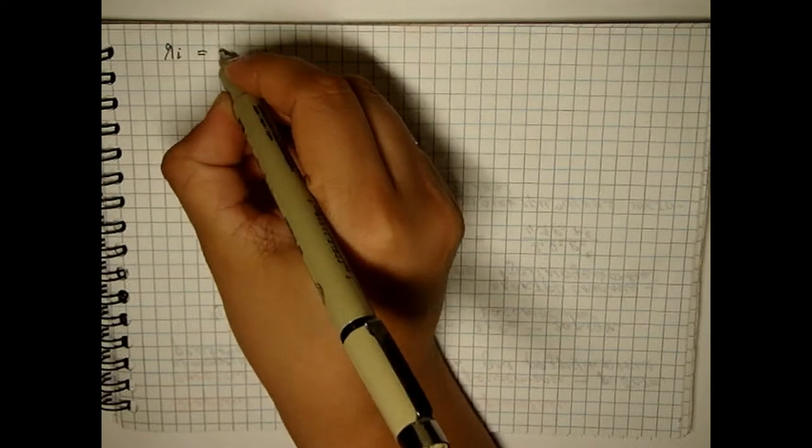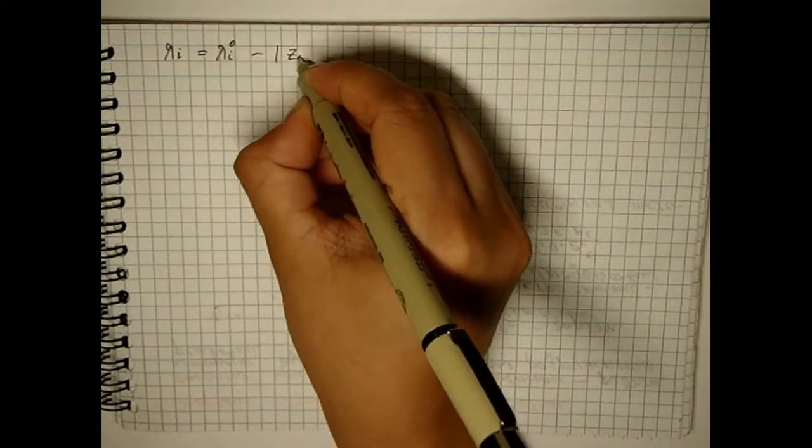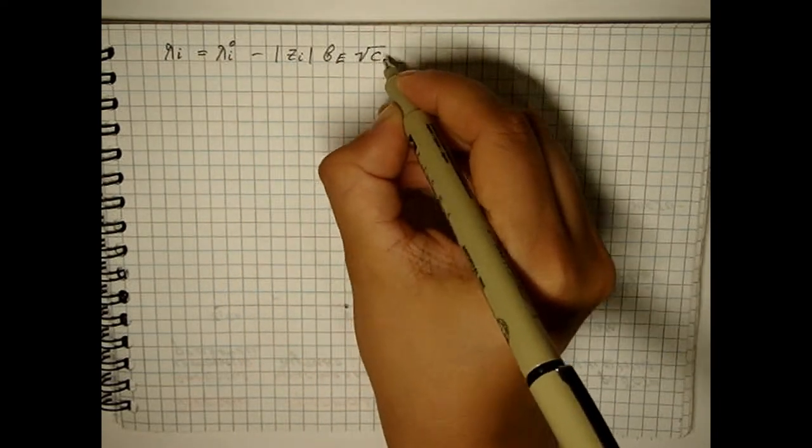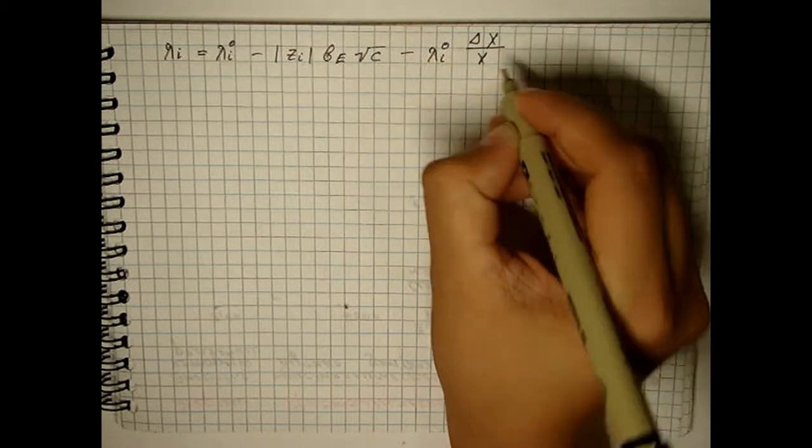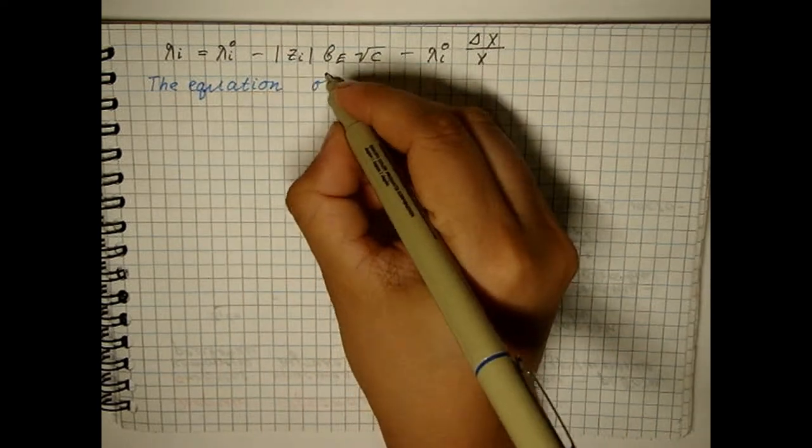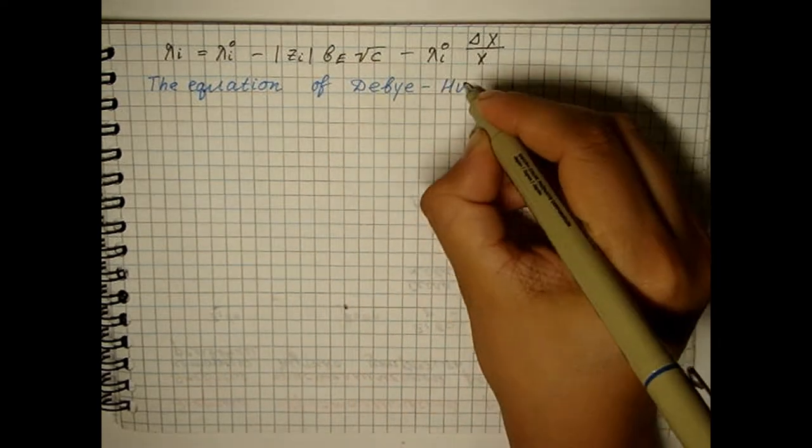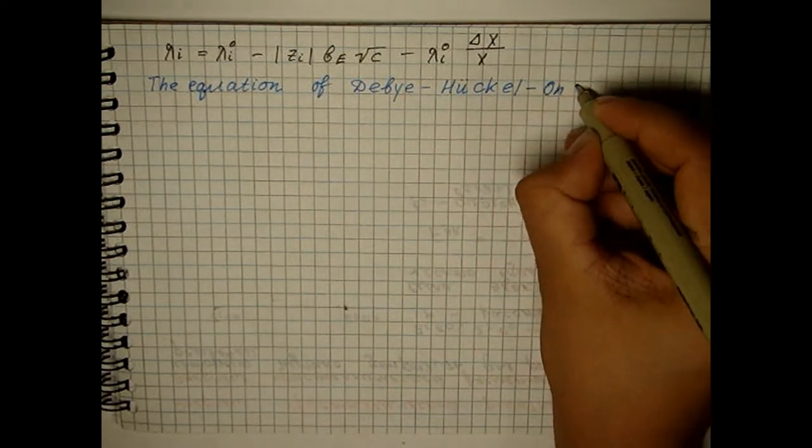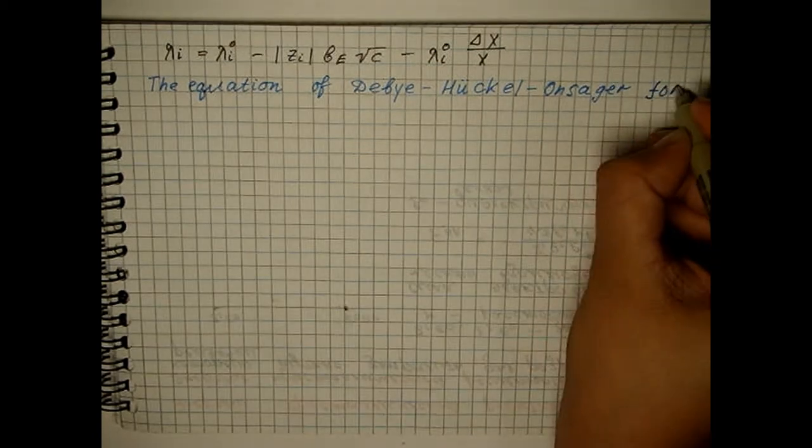Combining the resulting expression with the formula, we obtain the Debye Heukel-Leon-Ziger equation for the electrical conductivity of an ion in a solution of monovalent electrolyte, which takes into account the electrophoretic and relaxation effects.